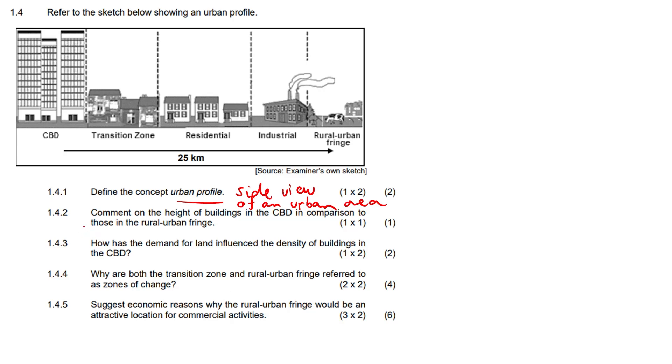So 1.4.2. Comment on the height of buildings in the CBD in comparison to those in the rural urban fringe. Well, the height of the buildings decreases. So the height of the buildings is definitely going to decrease, and the height of the buildings is actually going to increase toward the CBD, the central business district.